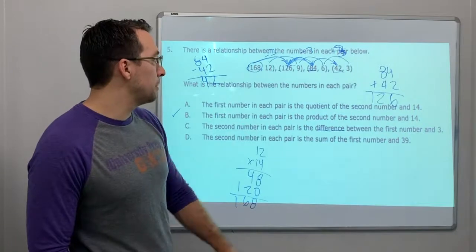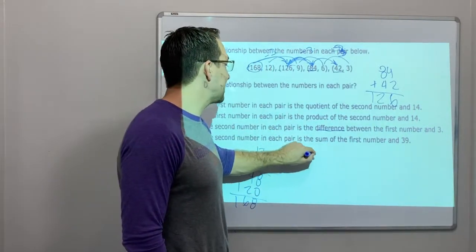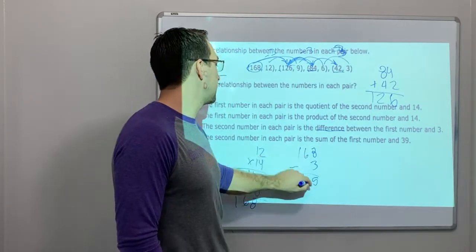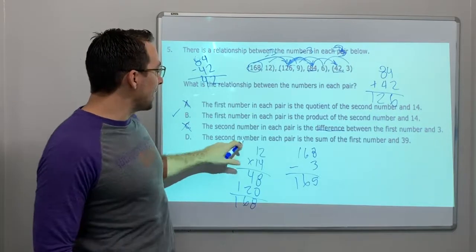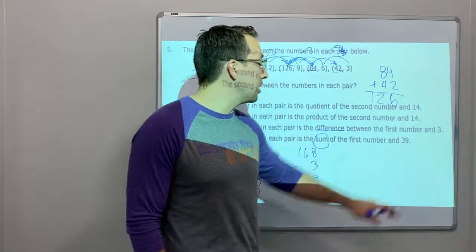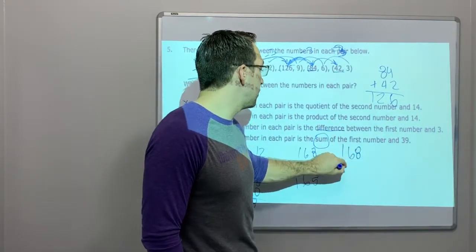The second number in each pair is the difference, so that's subtraction, between the first number and 3. No. Between the first number and 3. Look, 168 minus 3 is 165. That's wrong.